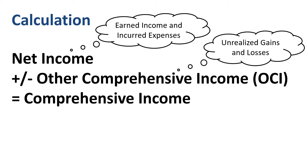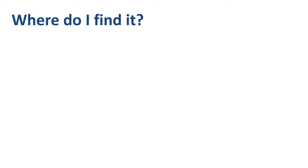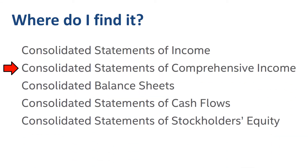To get an understanding of what is in there, let's review several real-life examples of the statement of comprehensive income. If you review the annual report of large US-based corporations, you will find the consolidated statement of comprehensive income right next to the consolidated statement of income, sometimes even printed on the very same page, as they are closely related.